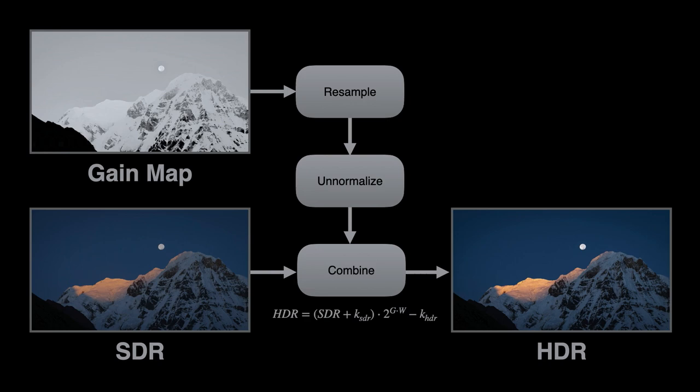We read the base rendition in a linear color space and the gain map from the file, and if the gain map is a different resolution, you resample it to match the base. We stored the gain map in this normalized 0-to-1 space, so we need to undo that transformation to get it back to its logarithmic version.